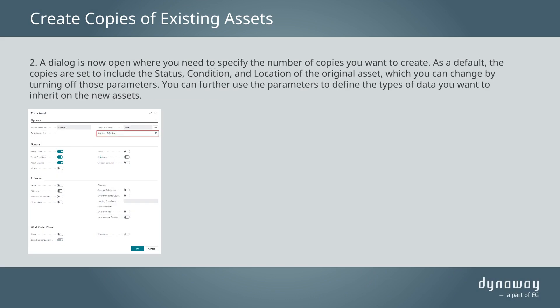A dialog is now open where you need to specify the number of copies you want to create. As a default, the copies are set to include the status, condition, and location of the original asset, which you can change by turning off those parameters.